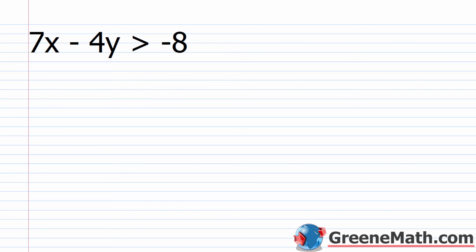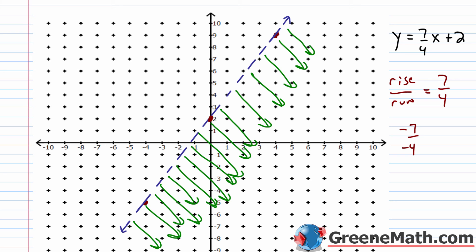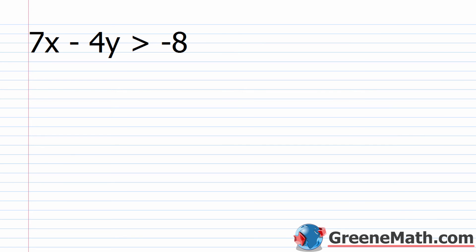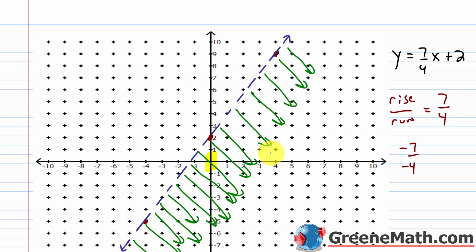One more thing: if we use the test point (0, 0) — the origin is very easy to use — we can verify we have the right answer. Plugging 0 in for x and y: 7 times 0 minus 4 times 0 equals 0, and 0 is greater than negative 8. That's true. So (0, 0) is in the solution region, and it is — below the dashed line — confirming we shaded the correct region.